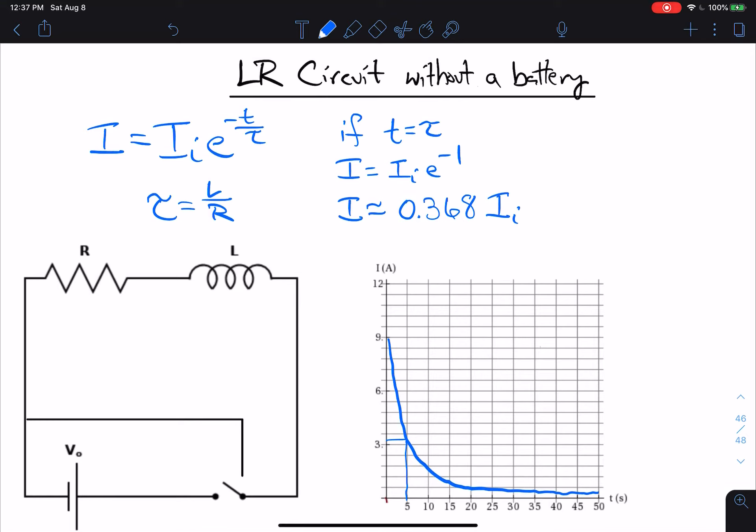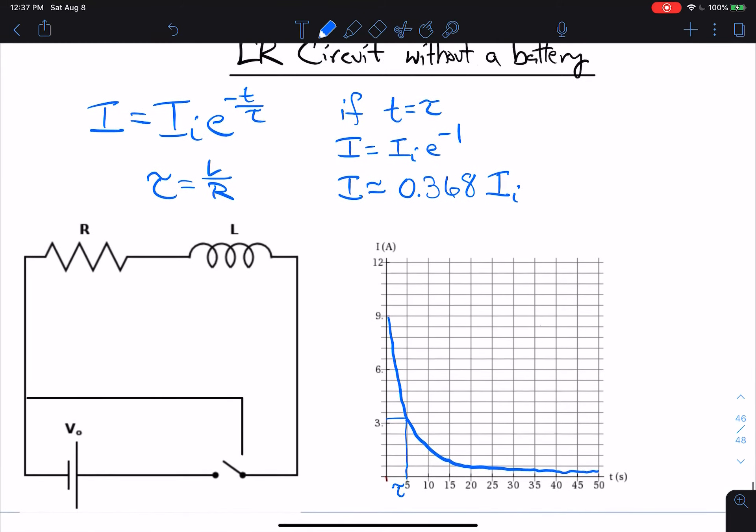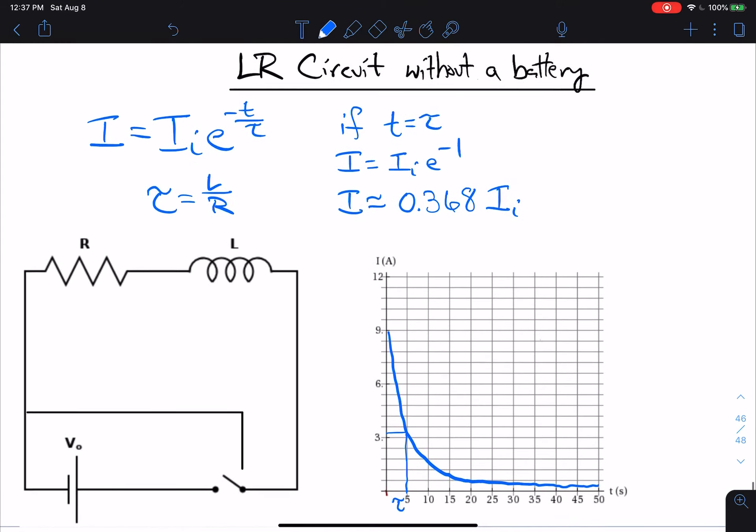And so for this example that I've drawn, tau is approximately five seconds. This is how we read the time constant off of the graph. It's a nice straightforward way to do it.